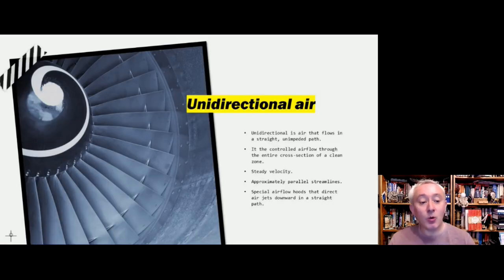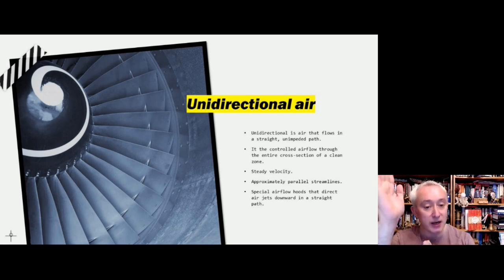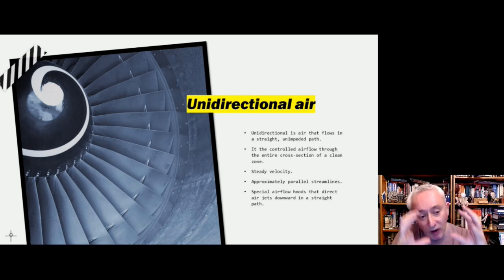So what is unidirectional air? Well, it's air that's flowing in a relatively straight, unimpeded path, and it's this controlled flow of air moving in one direction with a consistent velocity in approximate parallel streamlines